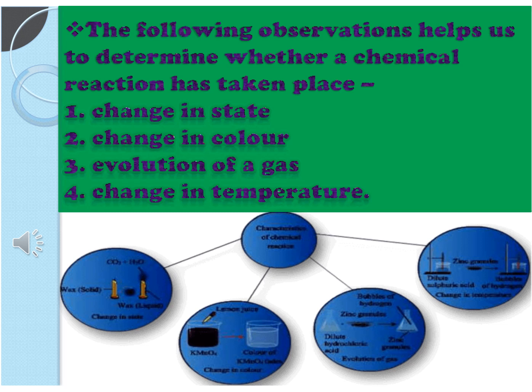Second characteristic is change in color. There is change in color during a chemical reaction. Here you can see that potassium permanganate, KMnO4 solution, which is purple in color, when it reacts with lemon juice forms a colorless solution which shows it is a chemical reaction.